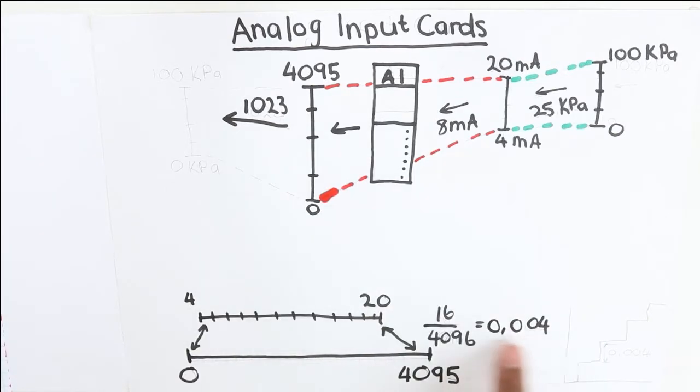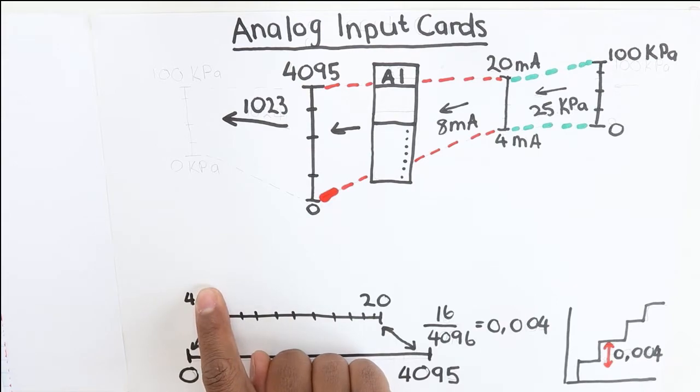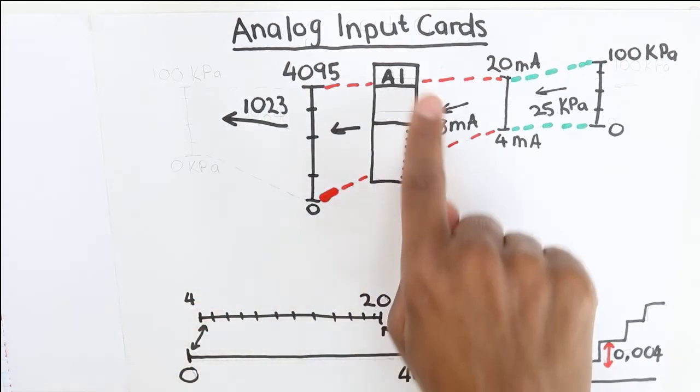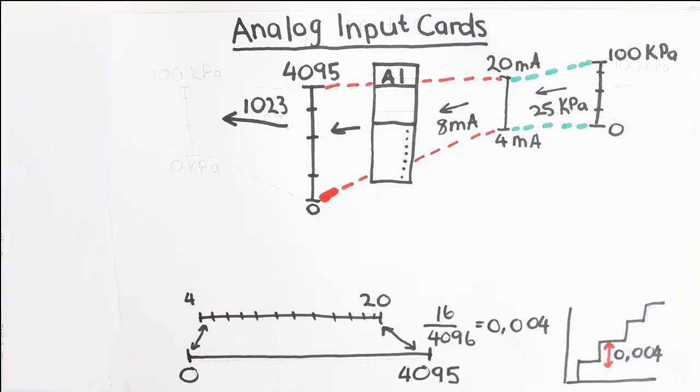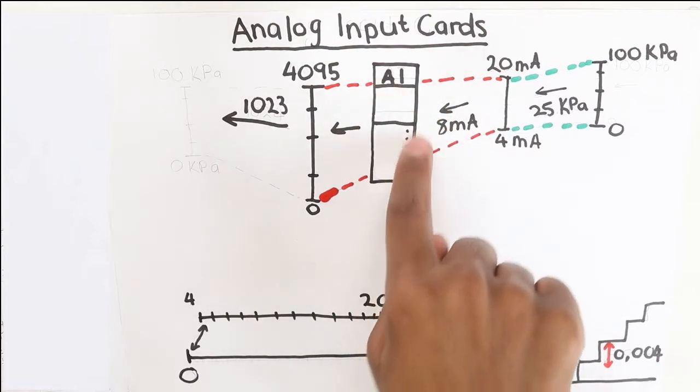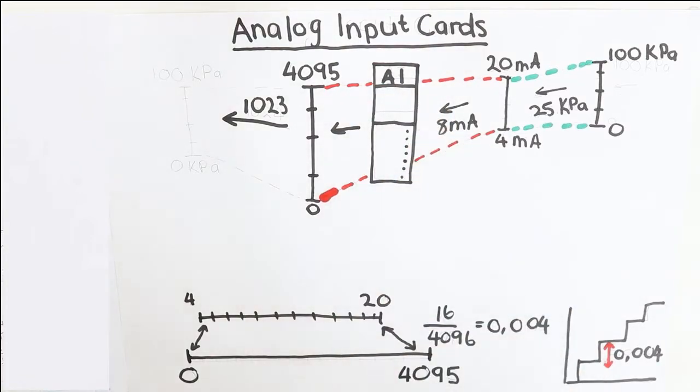This now represents the step value. So this means that when the current is 4 milliamps, you will see 0 on the register of this card. Only when the current value goes to 4.004 milliamps, then the value in this analog input card register will then move to 1.